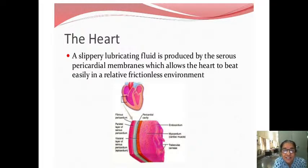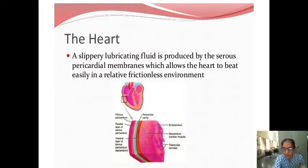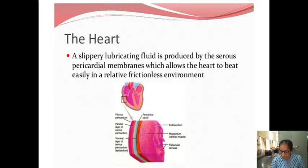There are three layers in the pericardium. One is the fibrous pericardium, then there are two serous layers — the parietal layer and the visceral layer. The light color one is the pericardial fluid. This is all the outer covering of the heart — that's the pericardium.